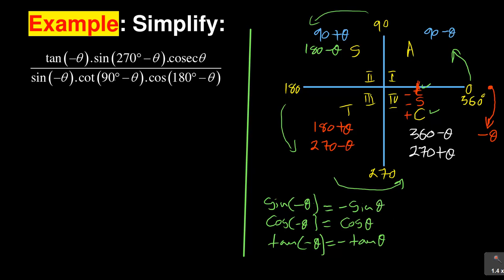So for the first part, tan(−θ) gives us −tan θ. Now we have to deal with 270 minus theta.